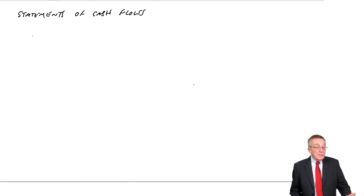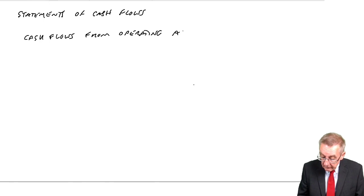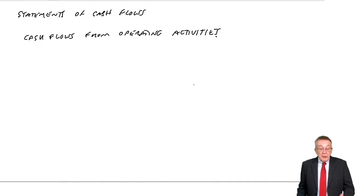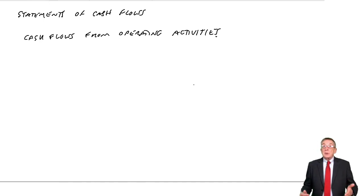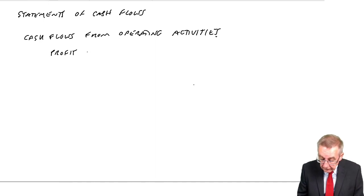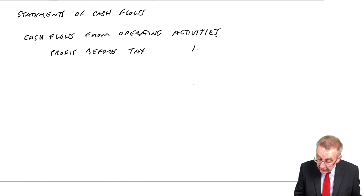The first heading is cash flows from operating activities, which is basically the cash we've generated from our profits. So we start with our profit before tax. If you look at the statement of profit or loss at the bottom, the profit before tax was £100,000.